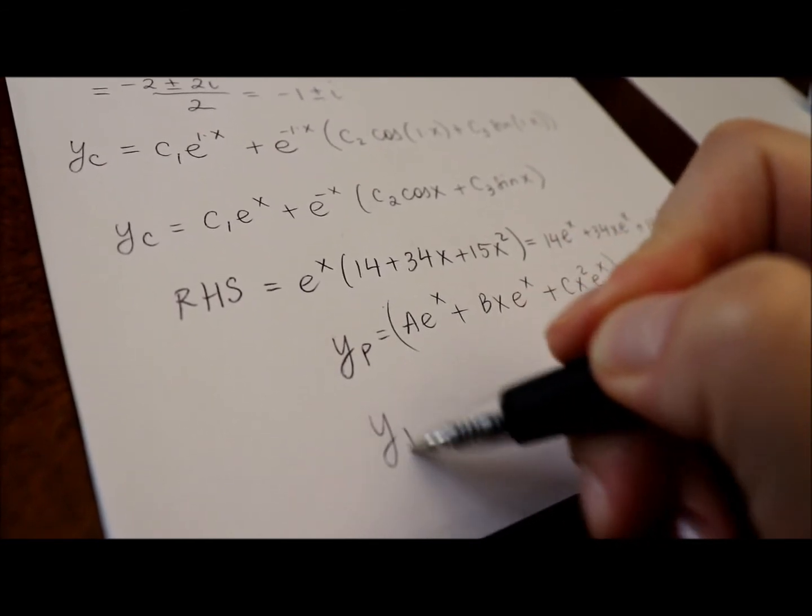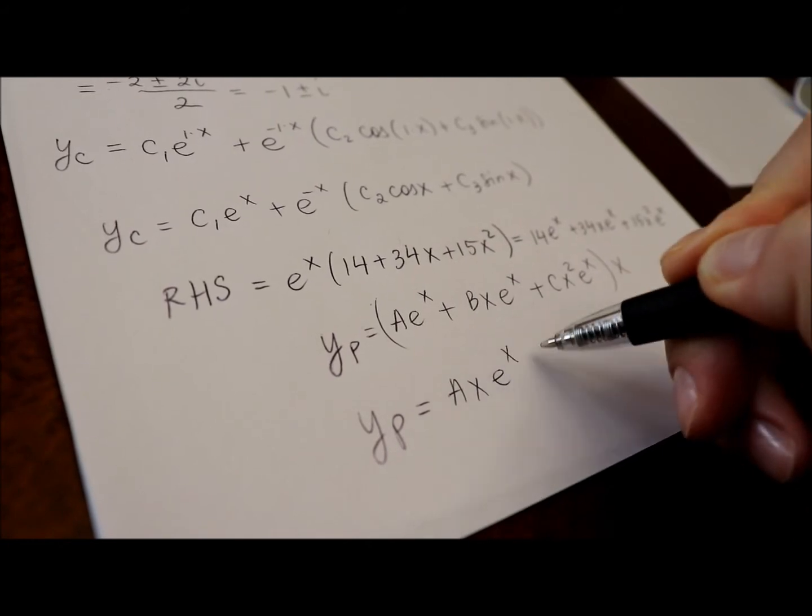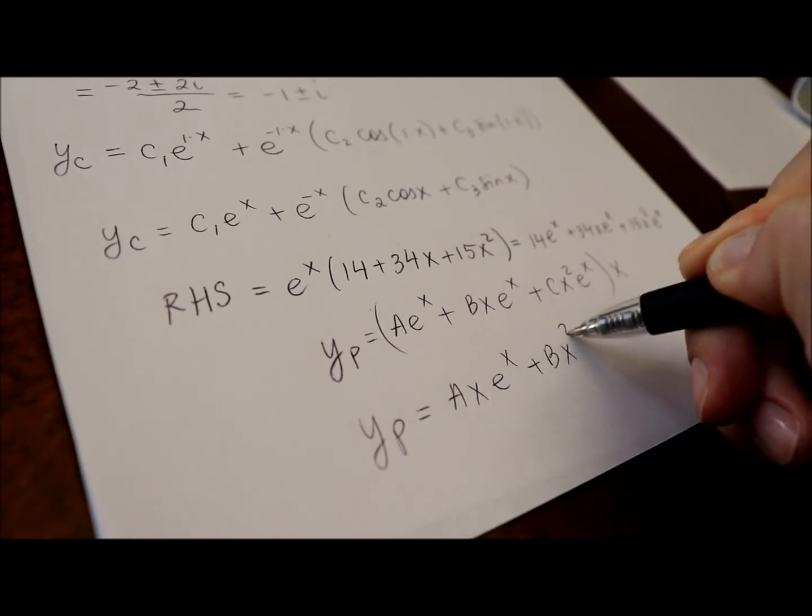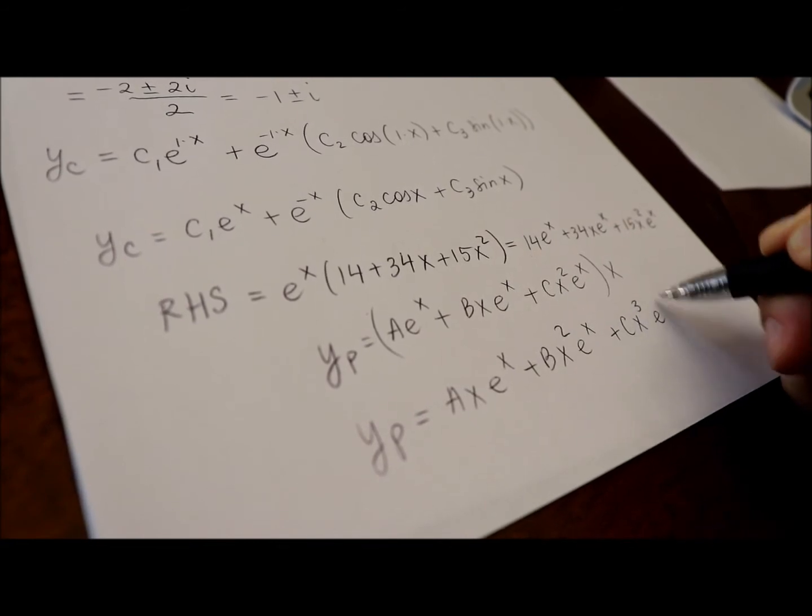Or in other words, the particular solution will be a x e to the x, plus b x squared e to the x, plus c x cubed e to the x.